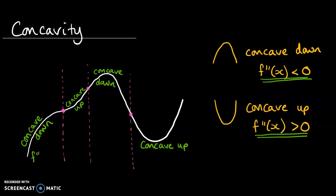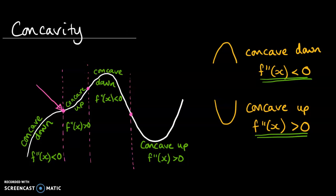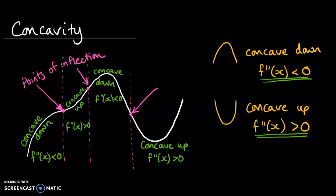Everywhere the curve is concave down, the second derivative is less than zero. Everywhere the second derivative is greater than zero gives the concave up portions. Regarding points of inflection — some are more obvious than others, but anywhere the curve changes from concave up to concave down or vice versa is a point of inflection. At a point of inflection, the second derivative changes from one side of zero to the other, so exactly at that point the second derivative equals zero. That's how you can find points of inflection.